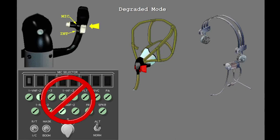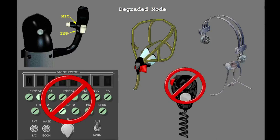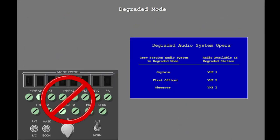You can use the mic position of the control wheel push-to-talk switch or the push-to-talk switch on the audio control panel to transmit with the VHF radio that is active for that crew station. The hand microphone does not operate in degraded mode. This table shows the radio that each station uses in the degraded mode of operation.